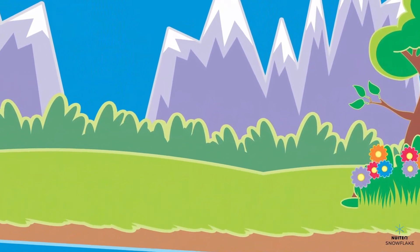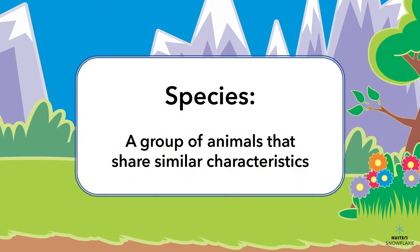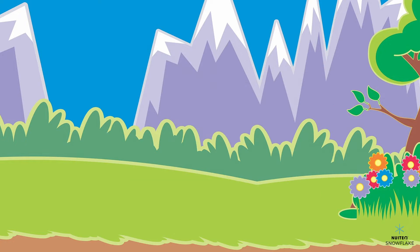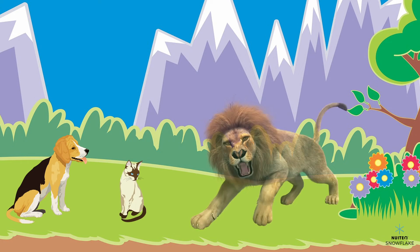Species is another big word that means a group of animals that share similar characteristics. For example, dogs, cats, and lions are all different species, because they have different traits, like fur, teeth, and claws.